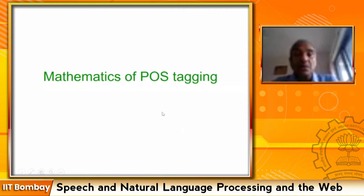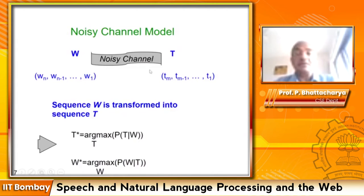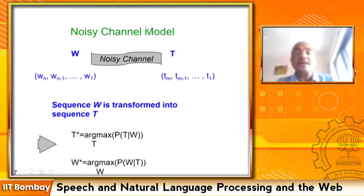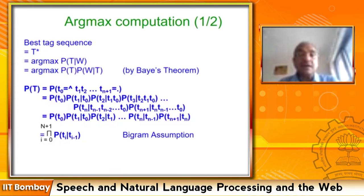Now we would like to go back to the mathematics of part of speech tagging. You would recall that we are making use of the noisy channel metaphor: the word sequence comes in at the input of the channel and goes out labeled by a sequence labeler — in our case, a hidden Markov model — and that is the tag sequence. We apply argmax because we want the highest probability tag sequence given the word sequence. We applied Bayes' theorem on P(t|w).